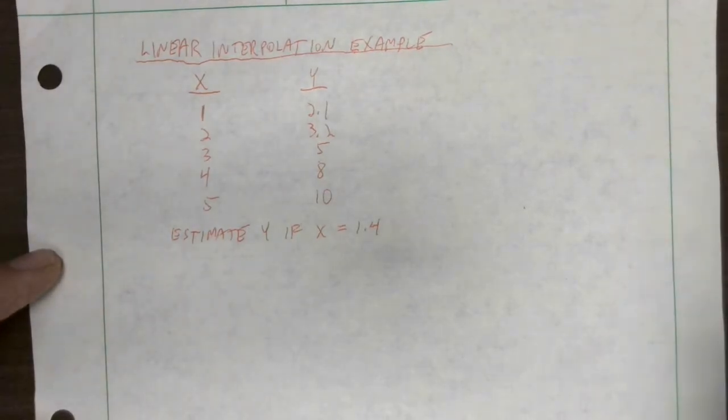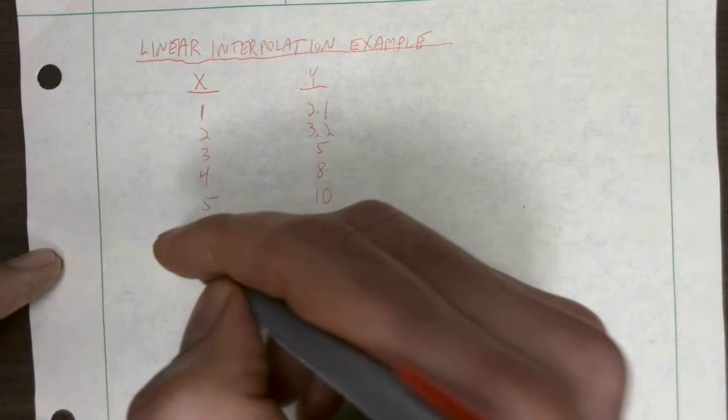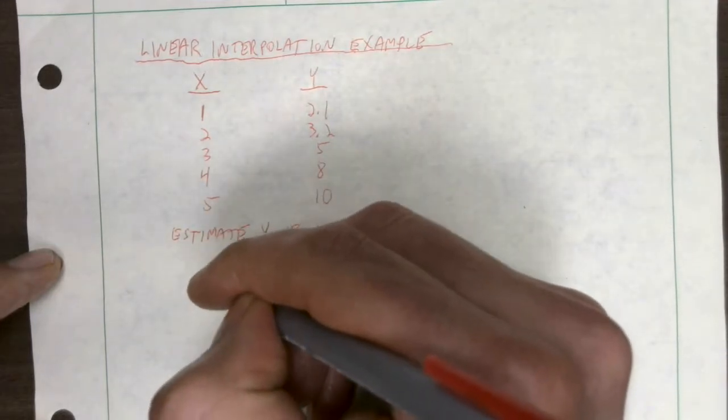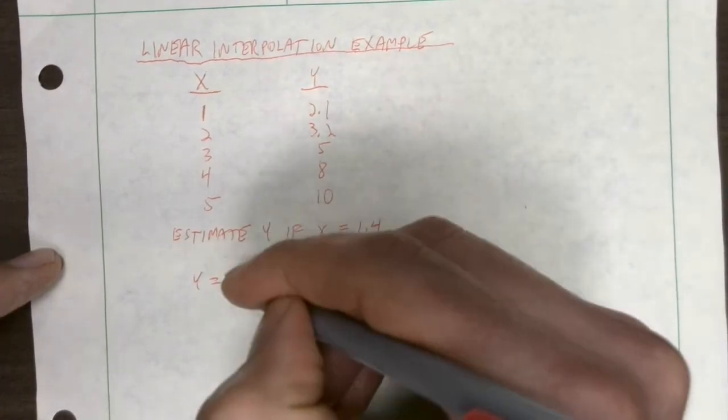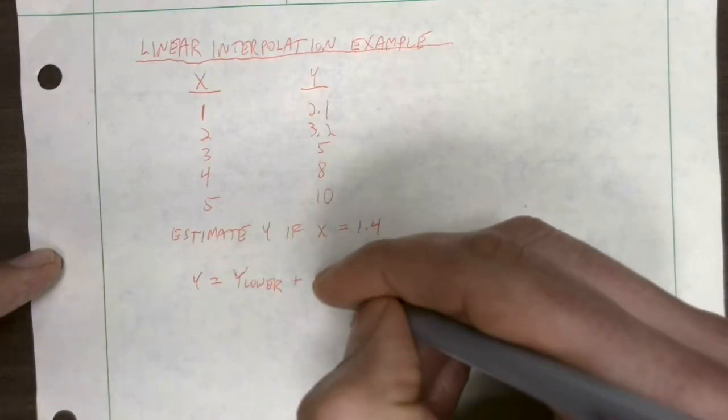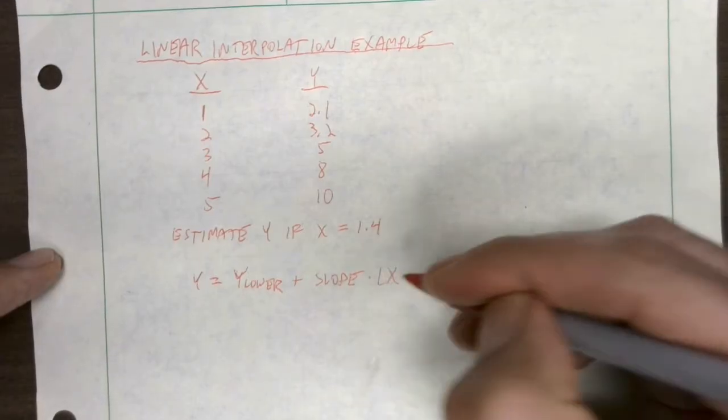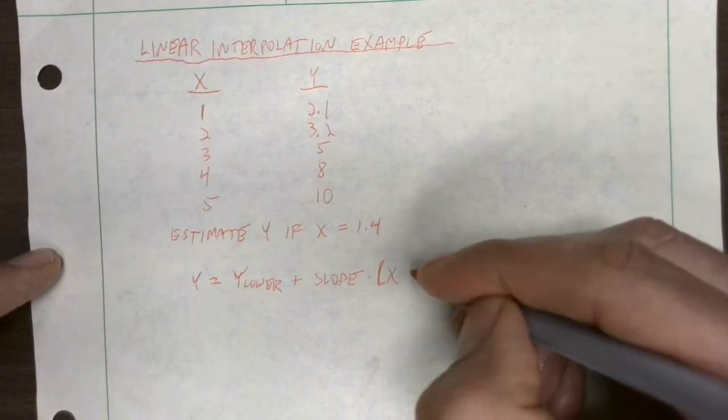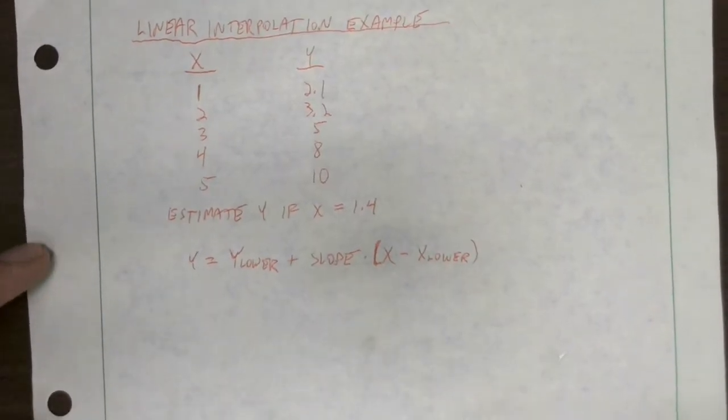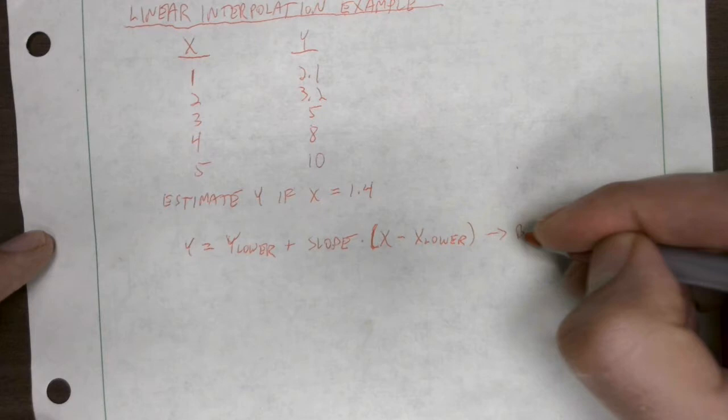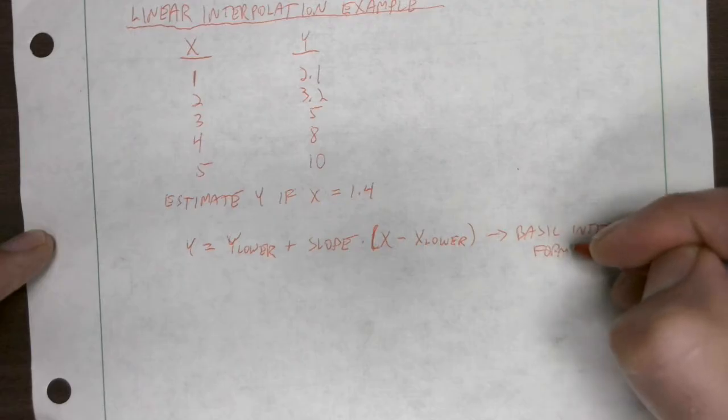Our basic formula for linear interpolation is: y equals y_lower plus the slope times (x minus x_lower). This is our basic interpolation formula.